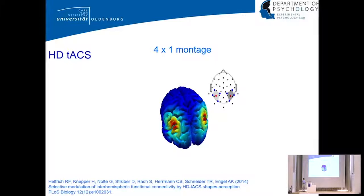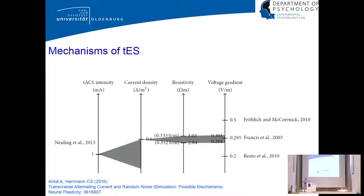If you use more, smaller electrodes, you can be much more spatially specific with your stimulation. For example, using two 4-by-1 montages over the two hemispheres achieves almost the spatial specificity you can reach with TMS.